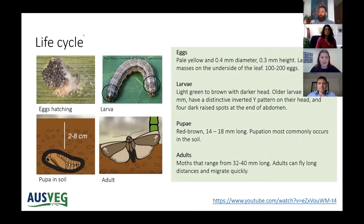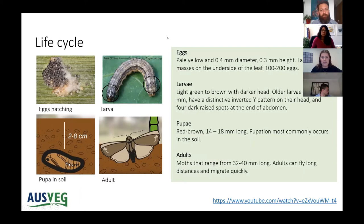A little bit about the life cycle of fall armyworm. There are four stages: egg, larva, pupa and adult. The eggs are laid in masses of about 100 to 200 on the underside of the leaf. A larva is typically light green to brown, distinguished by an inverted Y pattern on the head, though this is common to other armyworms. You also need to look out for four dark grey spots at the end of the abdomen shaped in a square.